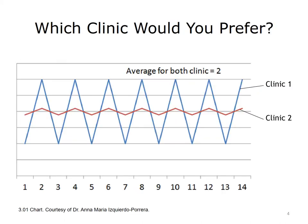Consider these two hypothetical clinics working on improving their patient care. Although the average is exactly the same for both clinics, Clinic 1 has a wider range. This means that although one month they do well, the following month they do much worse. Clinic 2's range of outcomes is smaller.